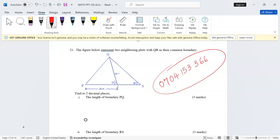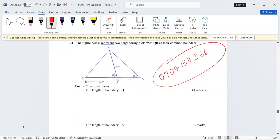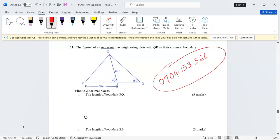As you can see the triangle here, these are two neighboring plots. QR, this length, is their common boundary. Find to two decimal places, part one, the length of boundary PQ. The boundary PQ we can label with length r because it is the length which is opposite to angle R.